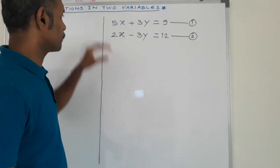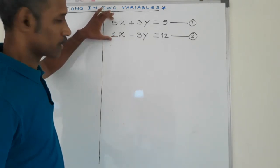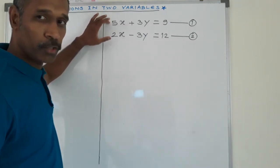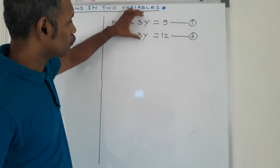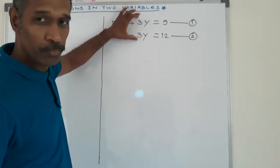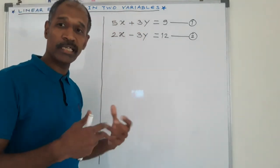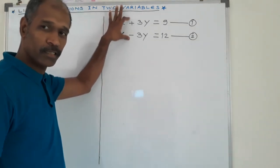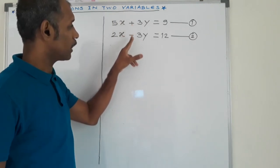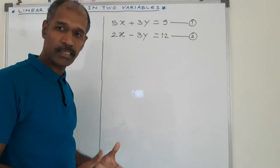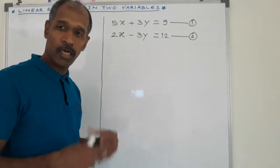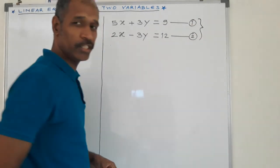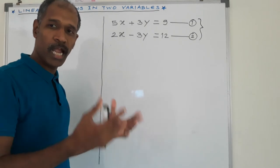In these two equations, coefficients of x are different, 5 and 2. Then, coefficients of y are the same, or we say equal. We observe their signs. Signs are opposite, that is plus and here minus. Now, coefficients are equal and their signs are opposite, plus and minus. Then, we add these two equations, means by addition method.